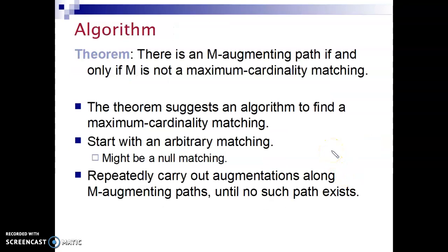This shows us a way to create an algorithm. By this theorem, there is an M augmenting path if and only if M is not a maximum cardinality matching. What does that mean? It means that if we have a matching in a graph, and if it's not maximum cardinality matching, this means that we can find an M augmenting path. That is, an augmenting path that will increase the number of edges in our current matching.